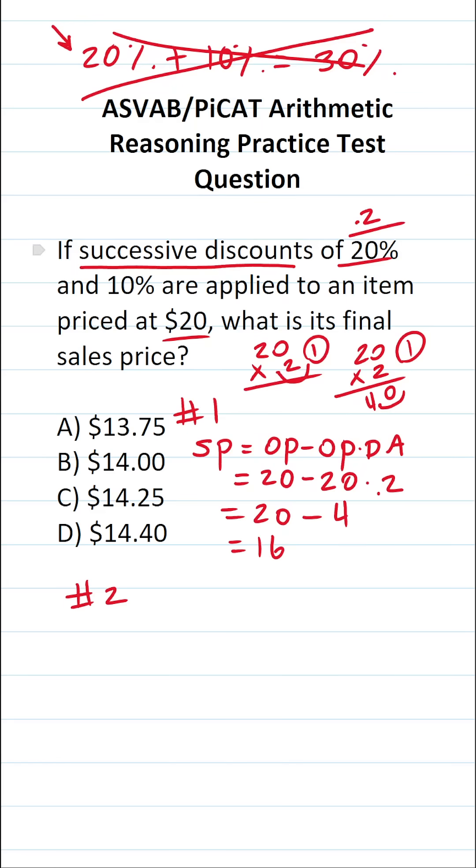All right, so we applied our discount of 20%. Now let's go ahead and apply our discount of 10%. Again, we're going to use the sales price formula. That's going to be equal to original price minus the original price times the discount amount. Now instead of using $20, we're actually going to use $16 as our original price. So this becomes $16 minus $16 times our discount amount of 10%. We're going to express 10% as the decimal 0.1.